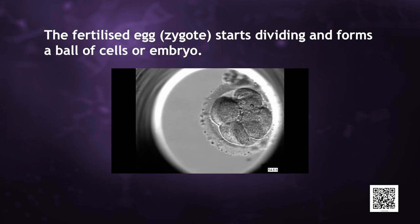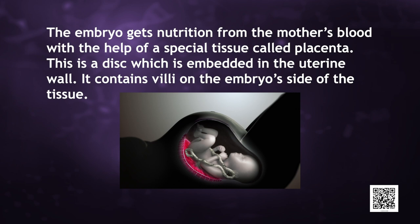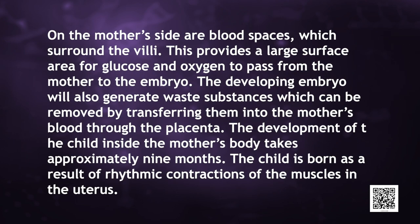The fertilized egg, known as the zygote, starts dividing and forms a ball of cells called an embryo. The embryo is implanted in the lining of the uterus, where it continues to grow and develop organs to become a fetus. The embryo gets nutrition from the mother's blood with the help of a special tissue called the placenta. This is a disc embedded in the uterine wall containing villi on the embryo side. On the mother's side are blood spaces which surround the villi, providing a large surface area for glucose and oxygen to pass from mother to embryo. The developing embryo also generates waste substances which are removed by transferring them into the mother's blood through the placenta.